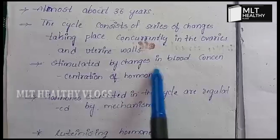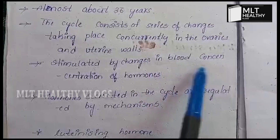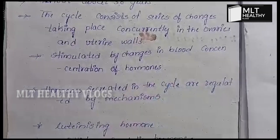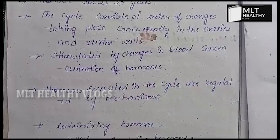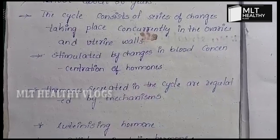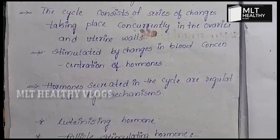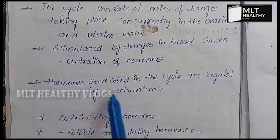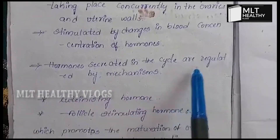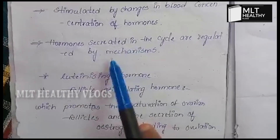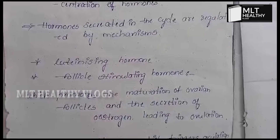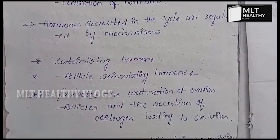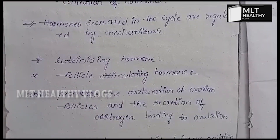The cycle is stimulated by changes in the blood concentration of hormones. The menstrual cycle is stimulated by blood hormone concentration. The hormones secreted in the cycle are regulated by a feedback mechanism, and many hormones are regulated by the body.